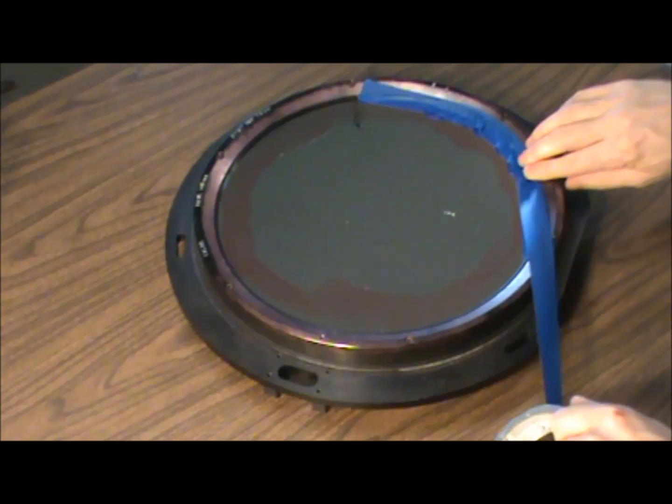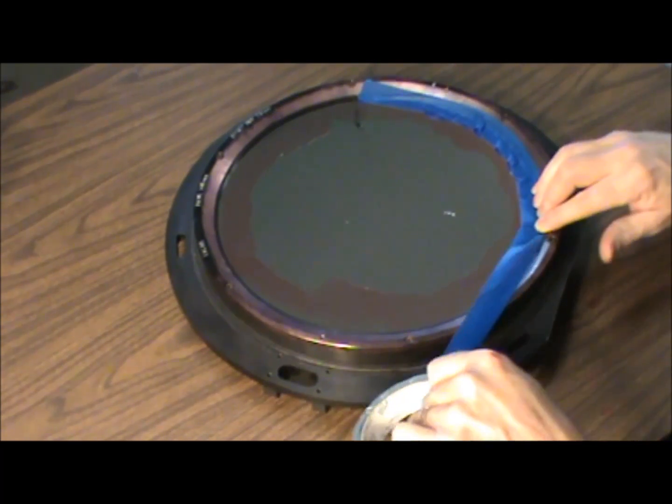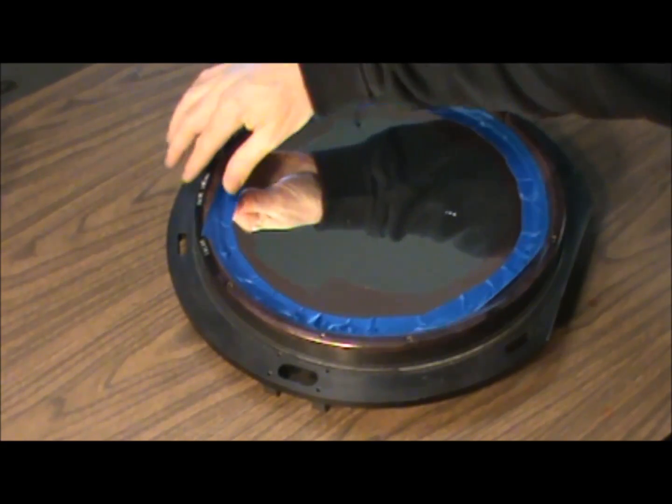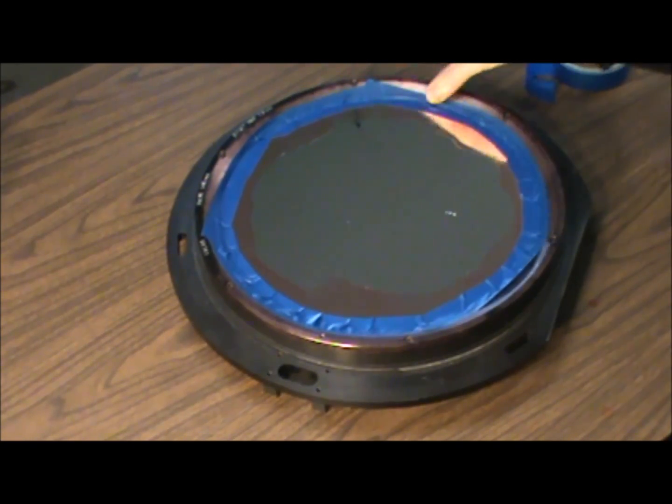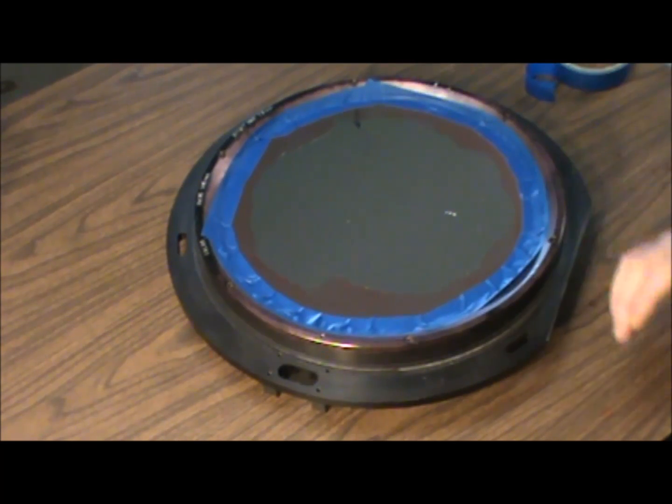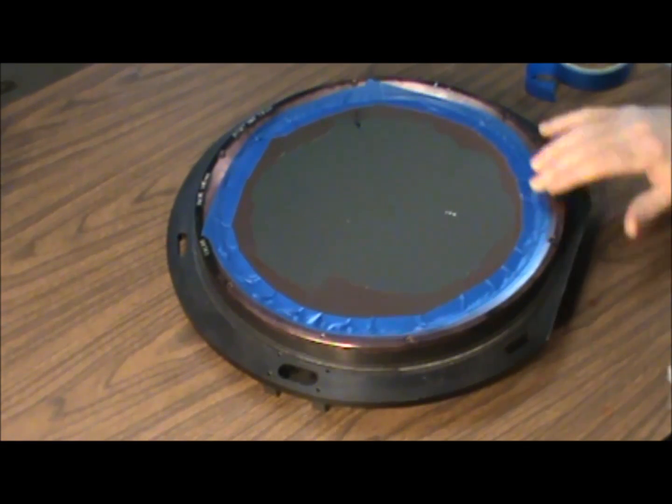You don't have to worry about getting it on the mirror because the mirror surface is protected by the polymer. Now we've got the perimeter of the mirror cell protected. The tape is on the mirror itself, but it's on the polymer, so it's not touching the mirror.